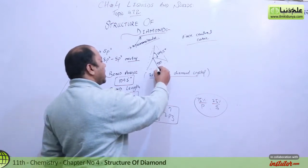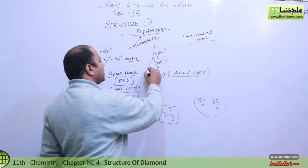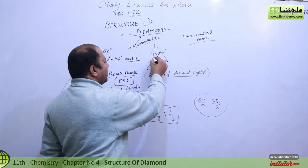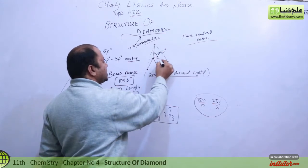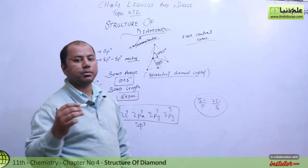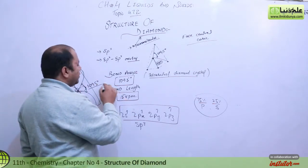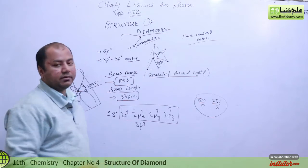One carbon here and the next carbon here. This carbon and that carbon, the distance between them is 154 picometers. So the bond length is 154 picometers and the bond angle is 109.5 degrees.